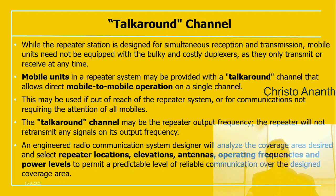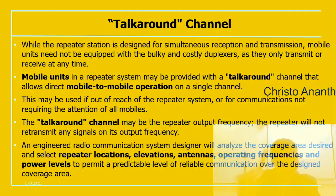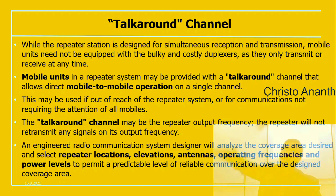While the repeater station is designed for simultaneous transmission and reception, mobile units need not be equipped with costly duplexers because they only transmit or receive at one time. Mobile units in a repeater system may be provided with a talk-around channel, allowing direct mobile-to-mobile operation on a single channel — useful when out of reach of the repeater system or for communications not requiring all mobiles' attention. The talk-around channel uses the repeater output frequency when the repeater is not transmitting. A system designer analyzes the coverage area and selects repeater locations, height elevations, antenna, operating frequency, and power level to achieve reliable communication over a large area.